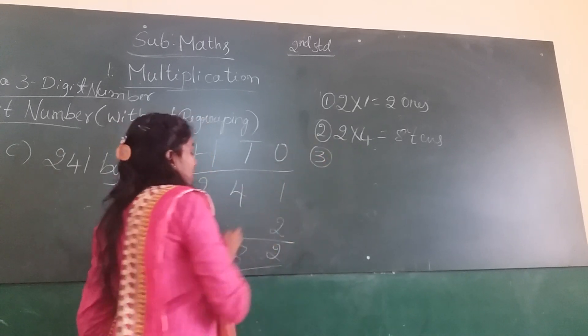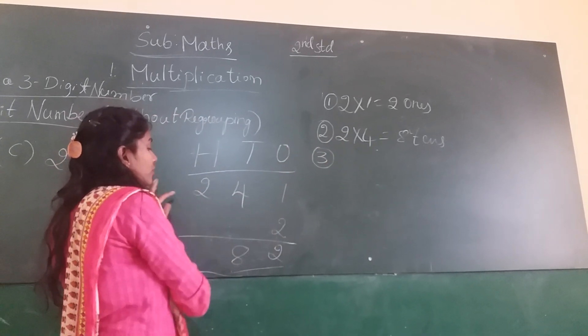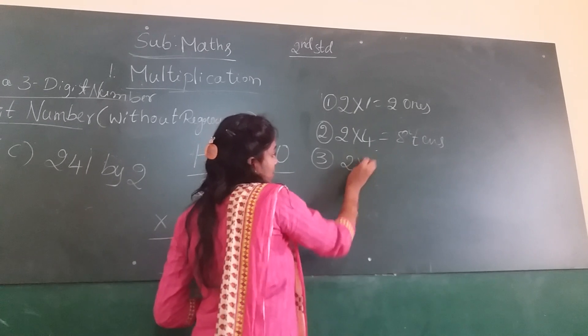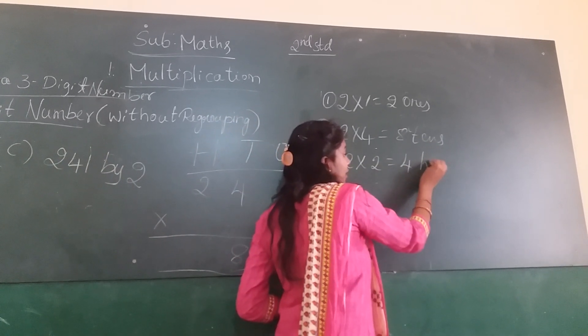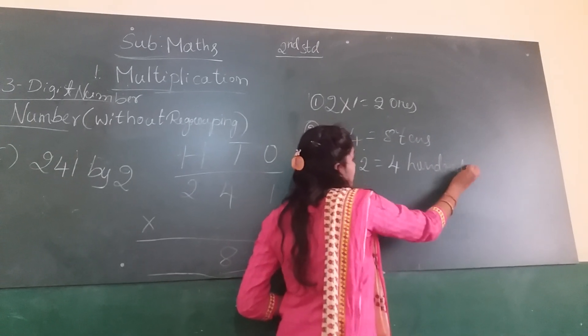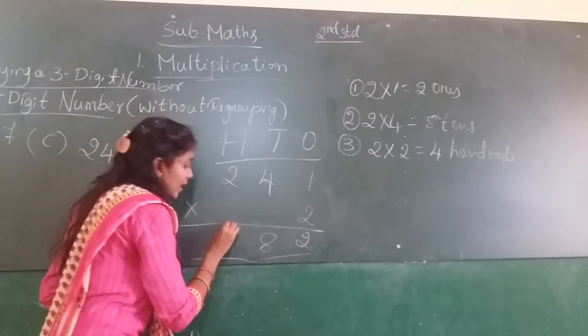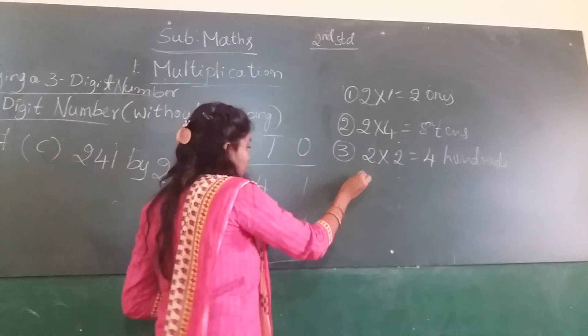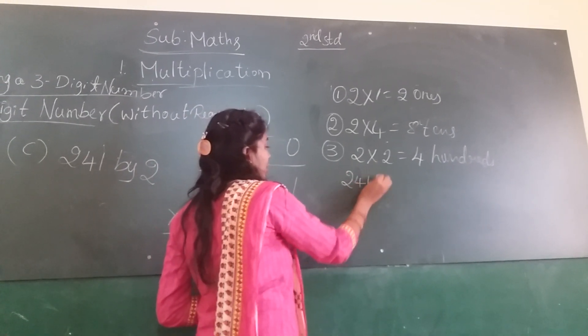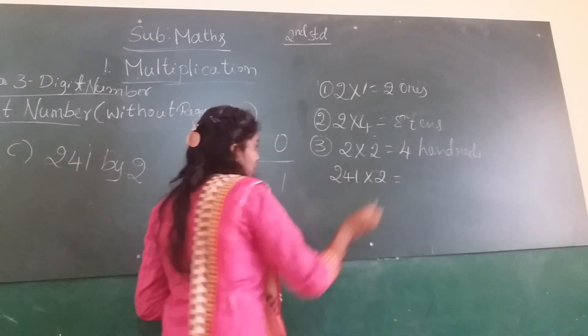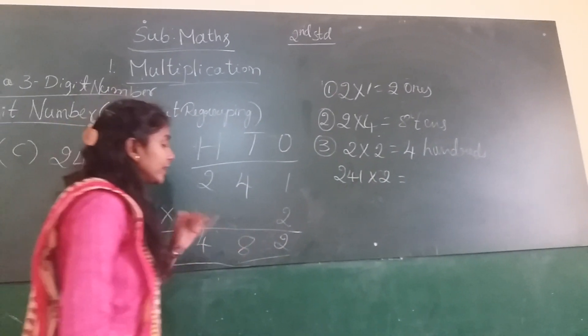Next, third step, hundreds. 2 into 2, 2 twos are 4 hundreds. Write in the hundreds column. So thus, 241 into 2 equals to 482.